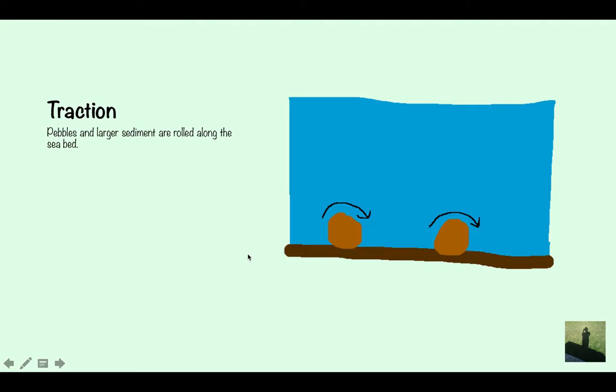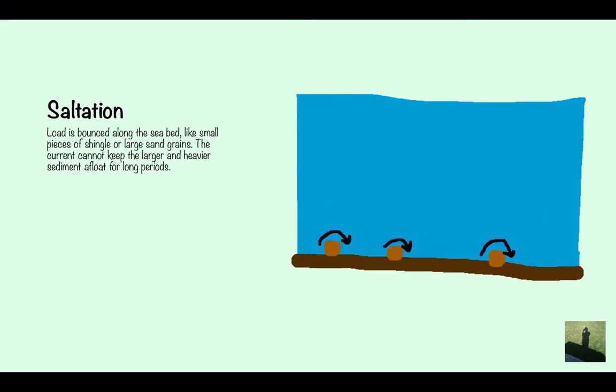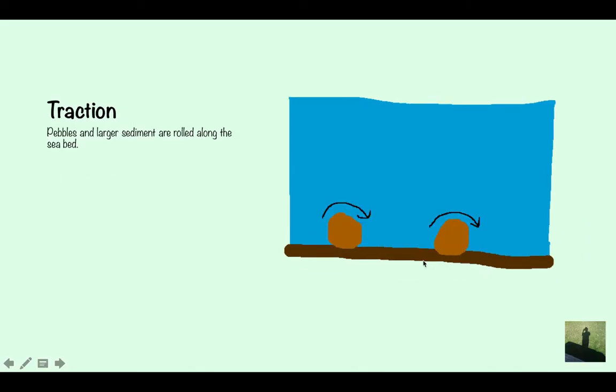Traction. So this is when you have pebbles or larger bits of sediment which are rolled along the seabed. So here, although they're being rolled, they're also bouncing a little bit. So they cannot stay here, but they can bounce a little bit like that. Here they're literally getting rolled along, so they're never going to come off the seabed, just going to get rolled along the seabed.